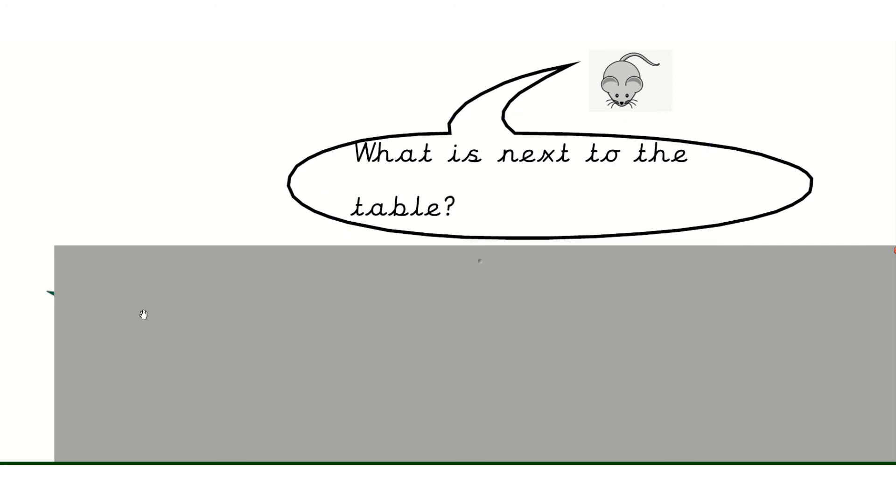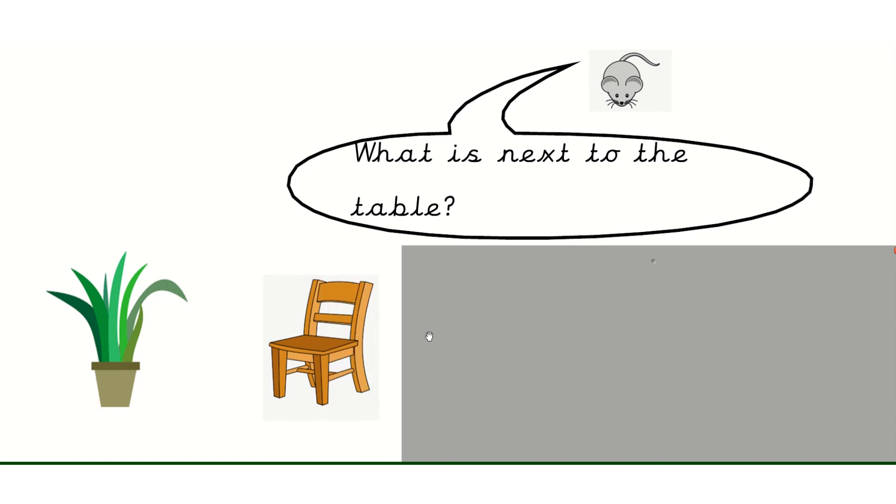And I've got some little pictures to help you. So I want you to pretend that these items are next to the table. This is a plant. This is a chair. This is a lamp. And that's another little mouse. So you've got four more sentences to write in today's lesson to complete your work.